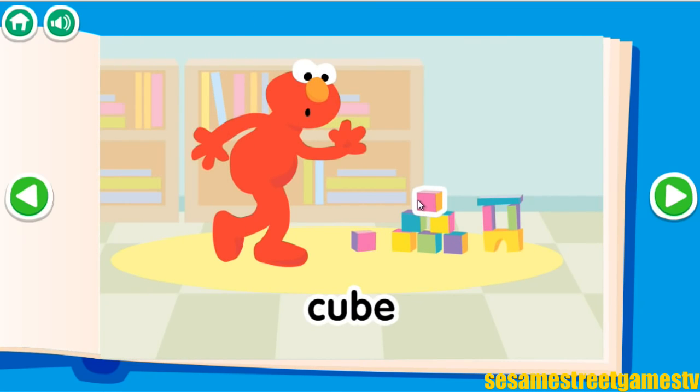Cube. A cube is a shape with six equal square sides. It is shaped like a box.